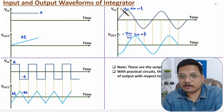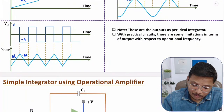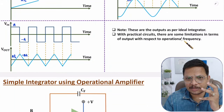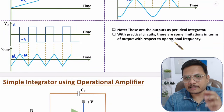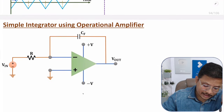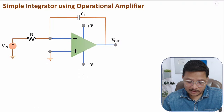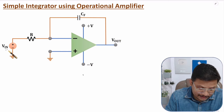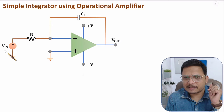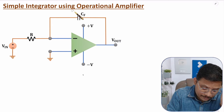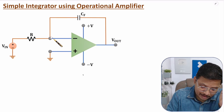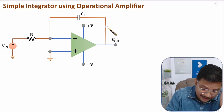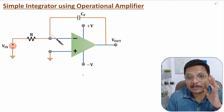All these input-output waveforms are as per the ideal integrator, but with a practical integrator there are some limitations which I am going to discuss in this video. First of all, I will explain the simple integrator using an operational amplifier. The agenda is to derive the output signal that is the integration of input. With this circuit of simple integrator, we have negative feedback given via capacitance Cf. In negative feedback, there is the virtual ground concept.